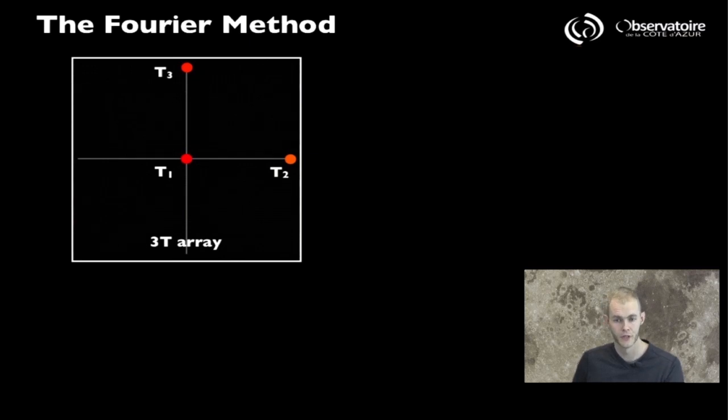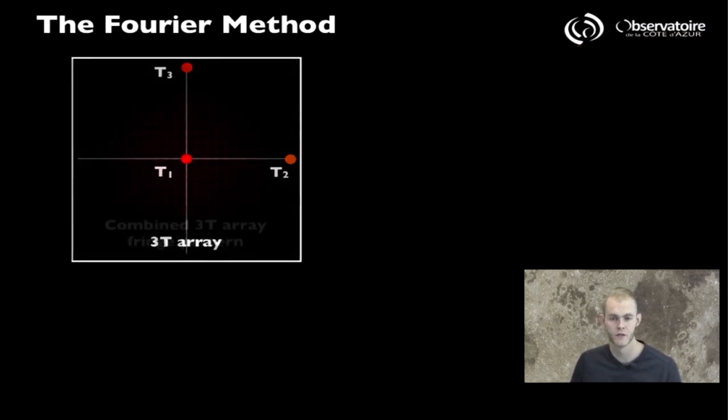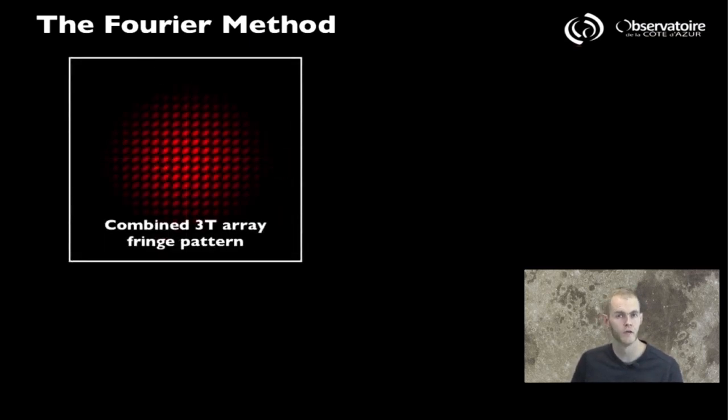Again here I'm showing you the three telescopes labeled T1, T2, and T3, and I'm just giving you a picture of what the interference pattern would look like that would be produced by one such three telescope interferometer.